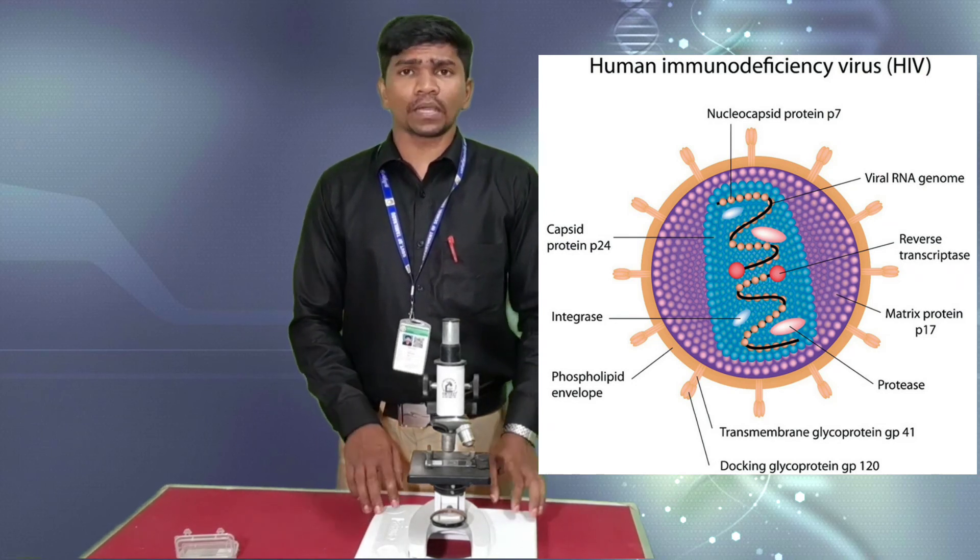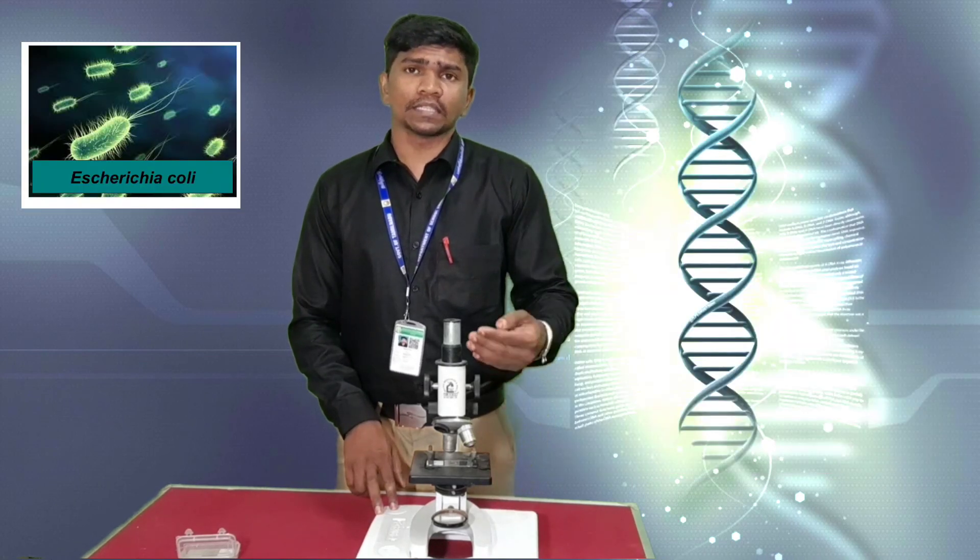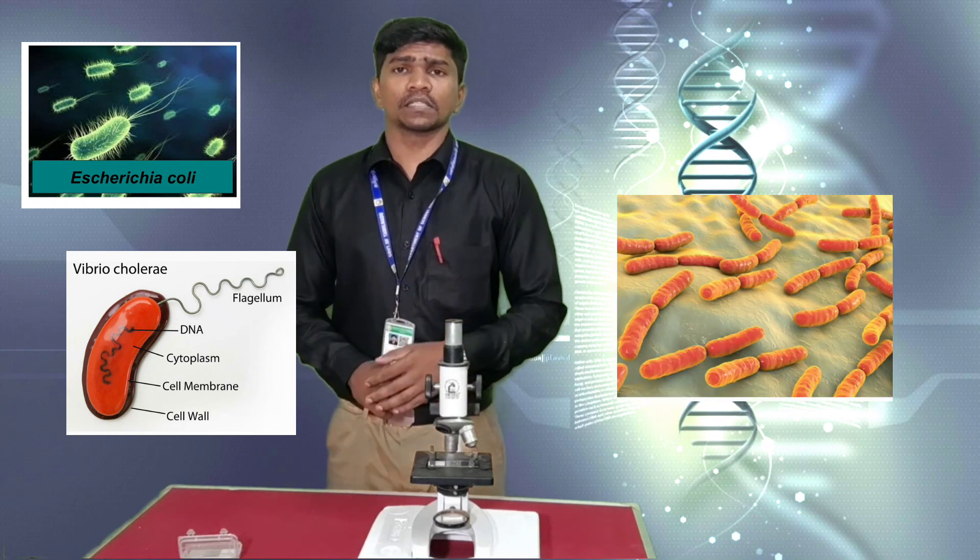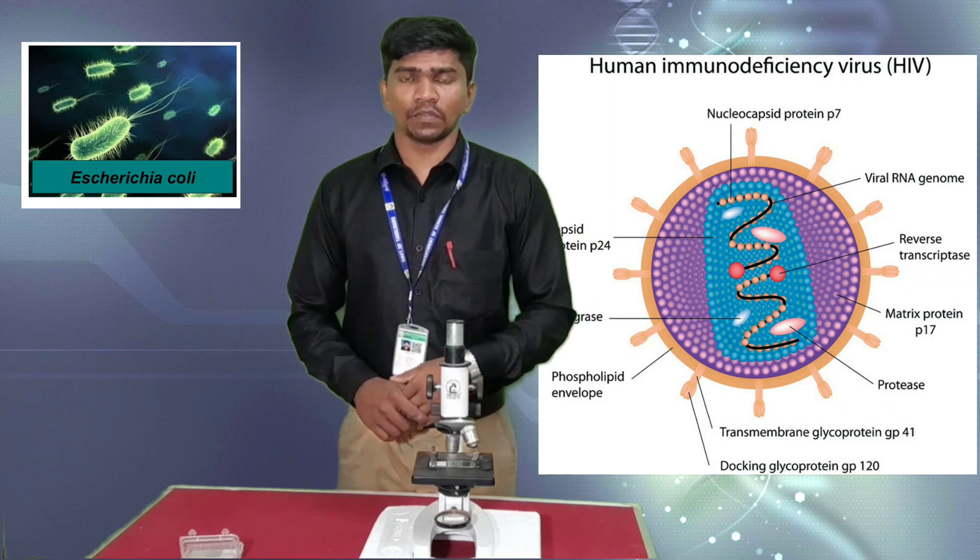So that's all students. With this practical you can easily gain 5 marks from the practical session. Either you can get the slide for these three bacteria - that is E. coli, Lactobacillus, and Vibrio cholerae - or you can get the photography like this for the HIV. Thank you.